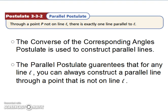Let's look at the parallel postulate. Through a point P, not on line L, there is exactly one line parallel to L. The converse of the corresponding angles postulate is used to construct parallel lines. The parallel postulate guarantees that for any line L, you can always construct a parallel line through a point that is not on line L.